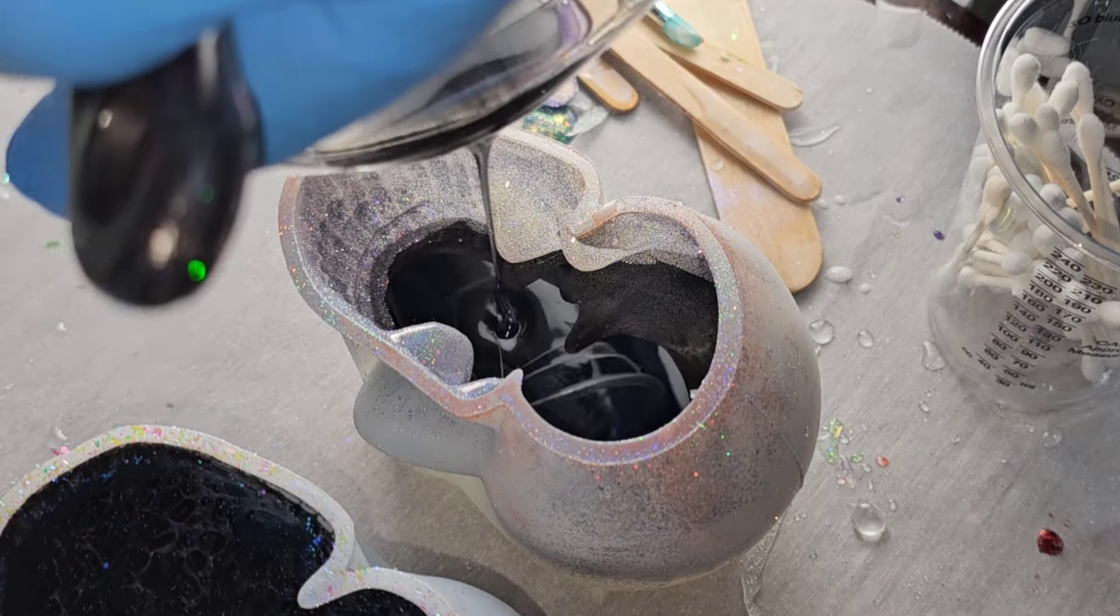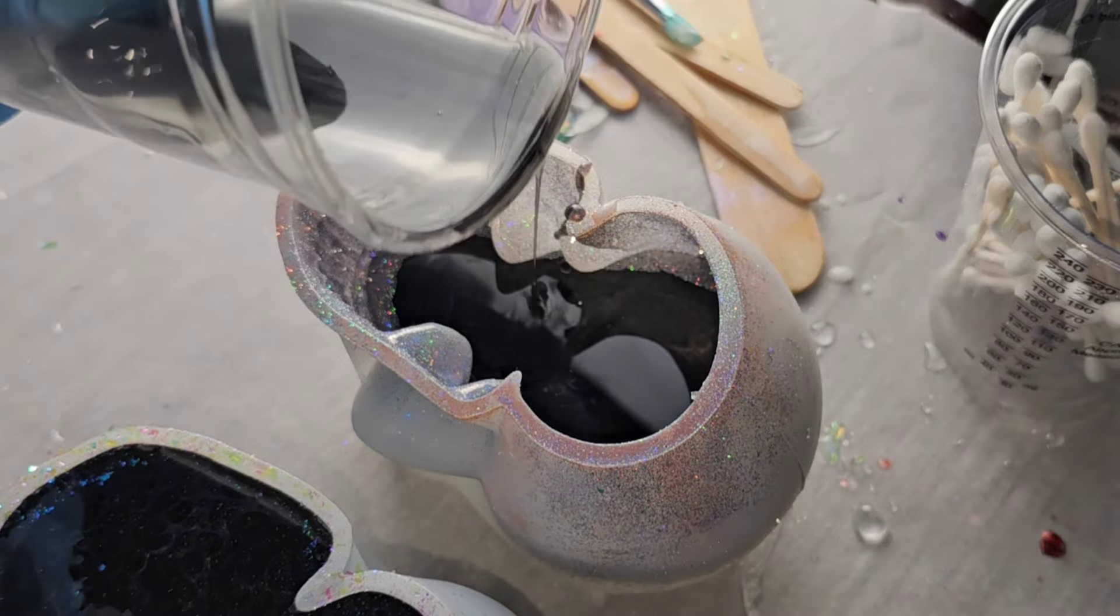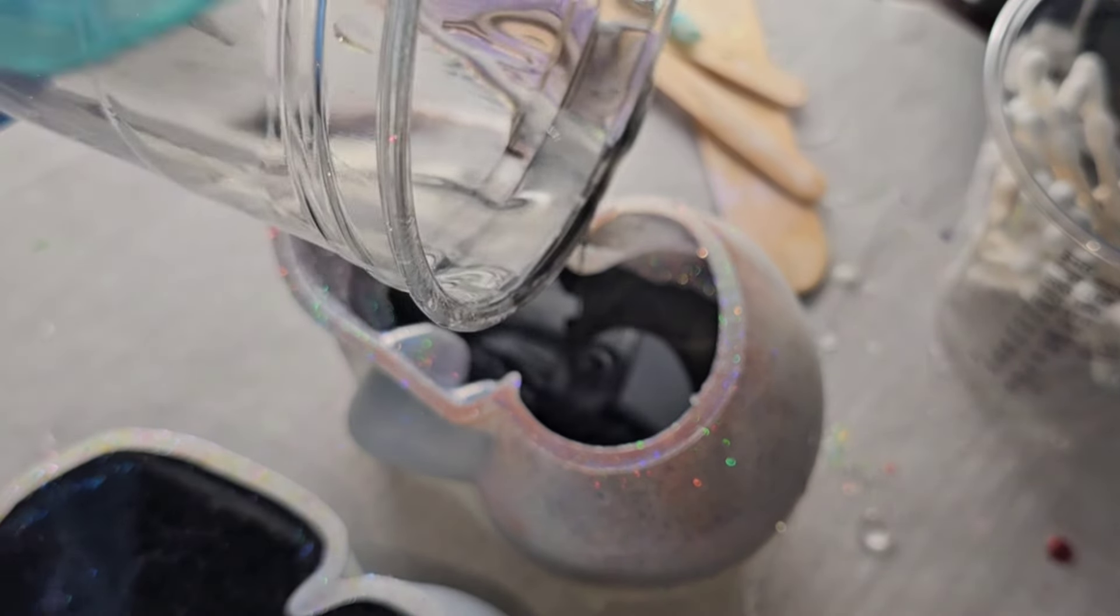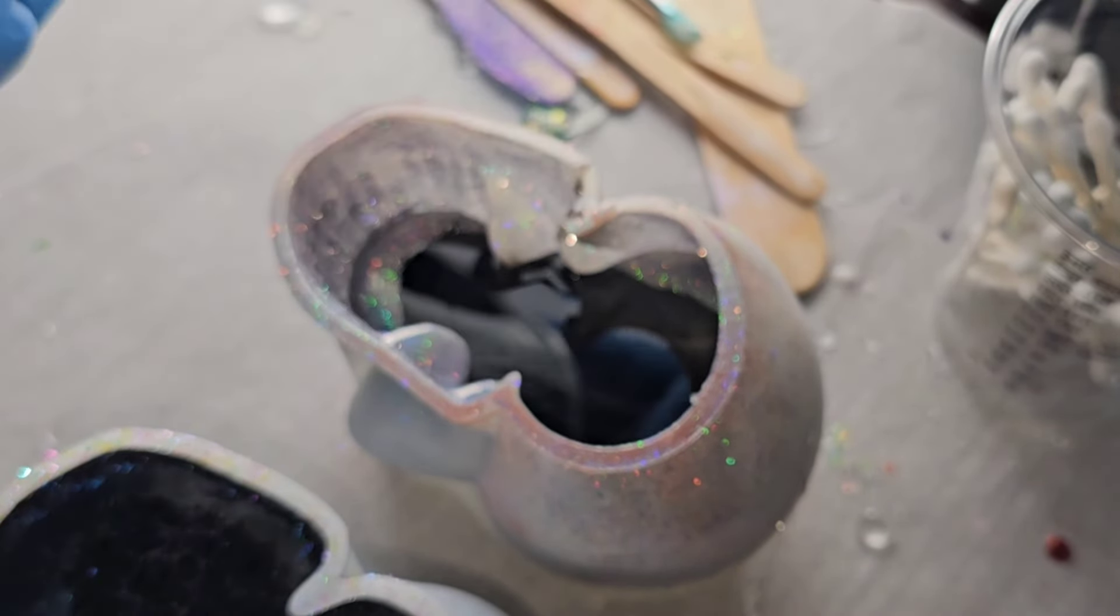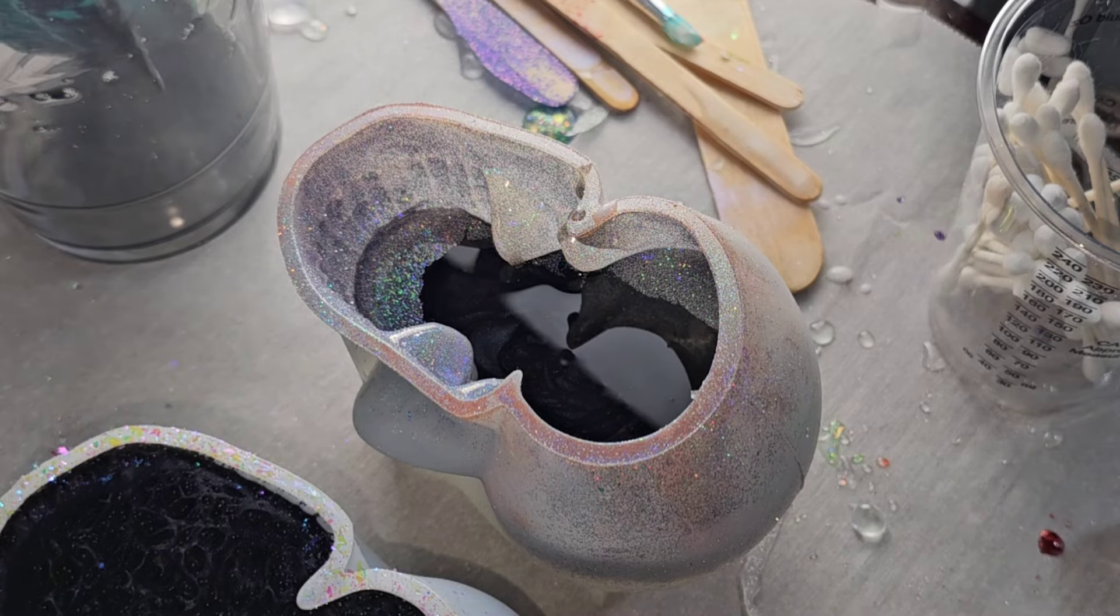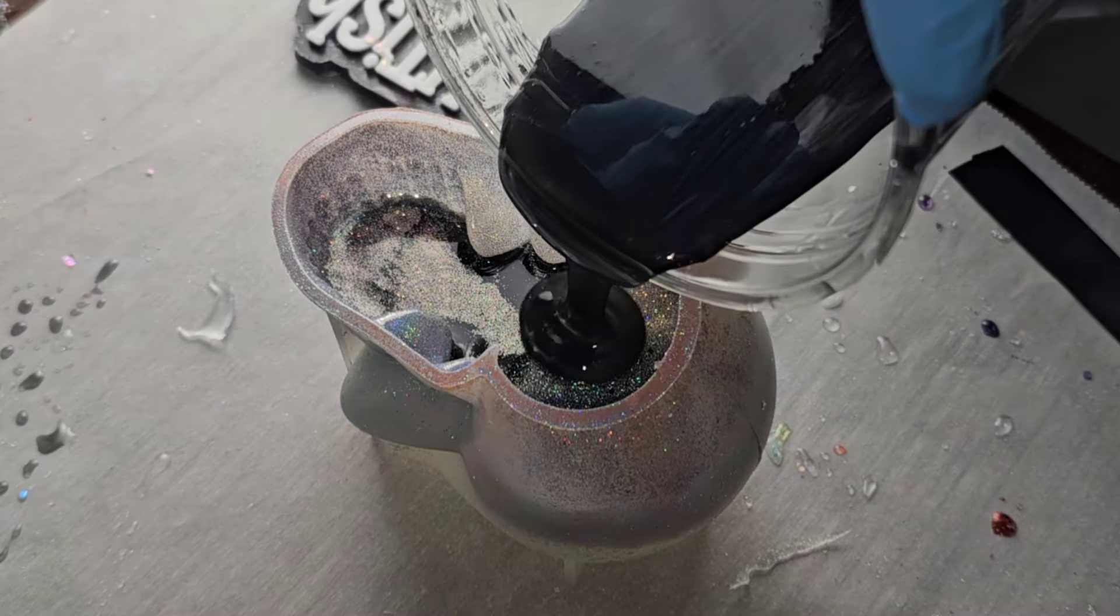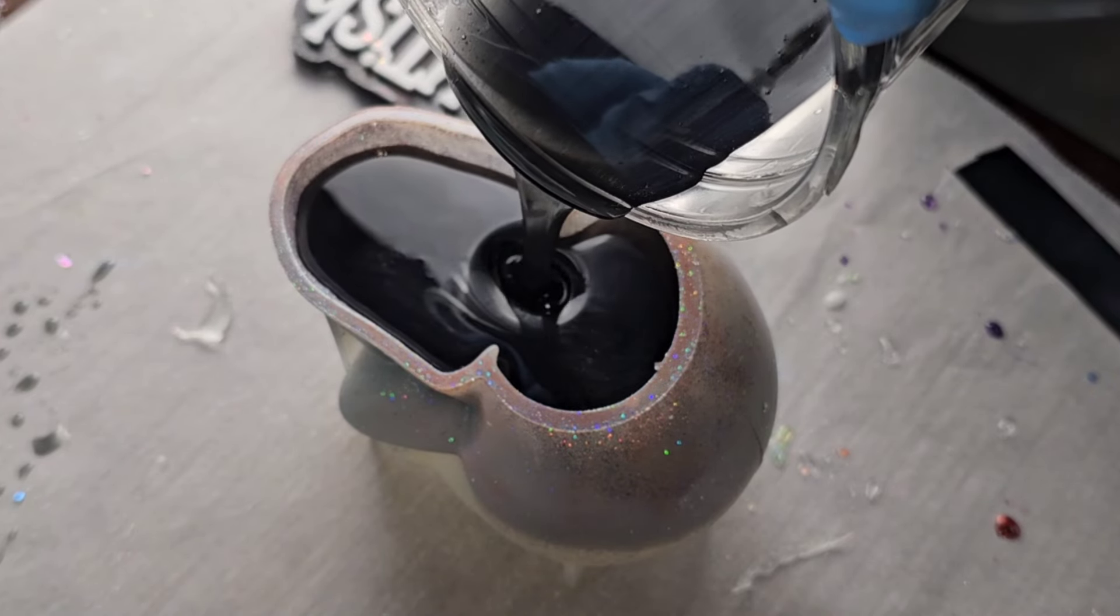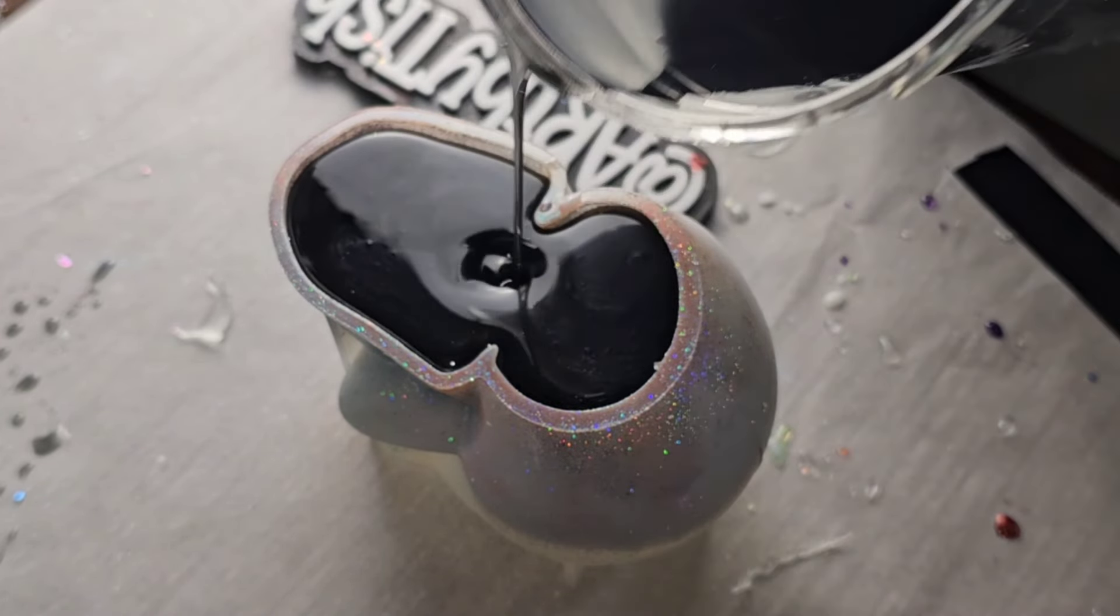And to make my clear epoxy black, I just used a pea size amount of black mica powder and two drops of black alcohol ink. And I didn't mix up enough on this day. You could 100 percent do this all in one layer, but this is the following day of me filling up the mold the rest of the way with some black.